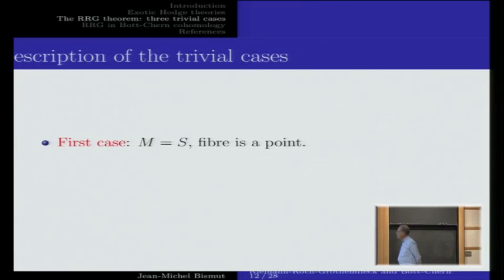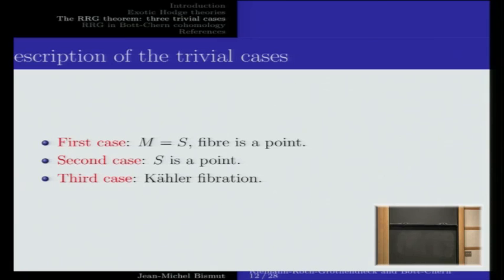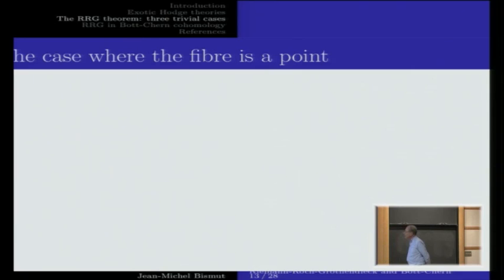Let me describe trivial cases of the theorem to be proved. The first case is where there is no fiber at all — the fiber is just a point, M = S, X = point. The second trivial case is where S is a point. The third case will be that of a Kähler fibration. These two extreme cases — M = S with fiber a point, and S a point — will serve as toy models for what we do later.